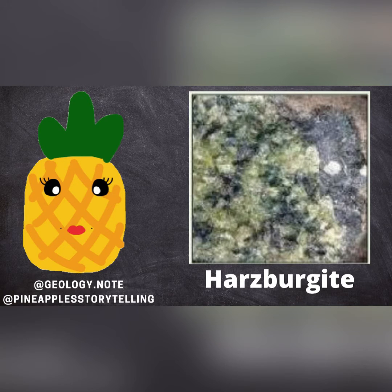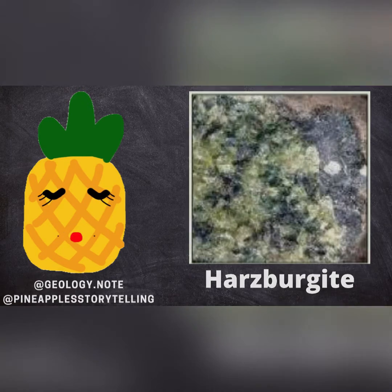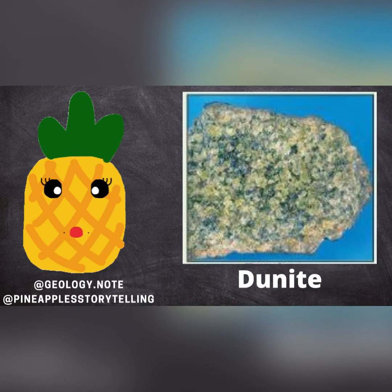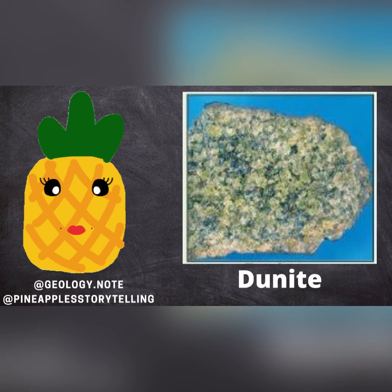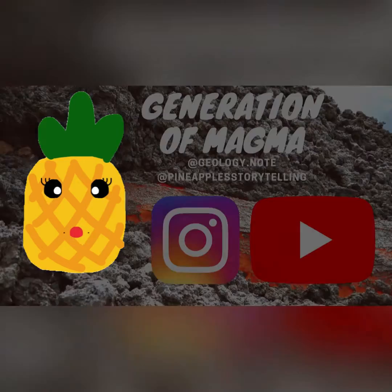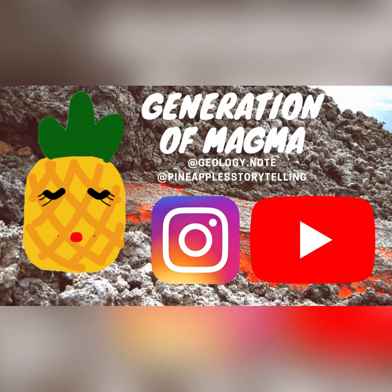In order to make dunite, we need 40% melting from harzburgite. Dunite is mainly composed of olivine, as olivine has a really high melting point compared to other minerals. And this is how we generate magma from peridotite in the mantle.